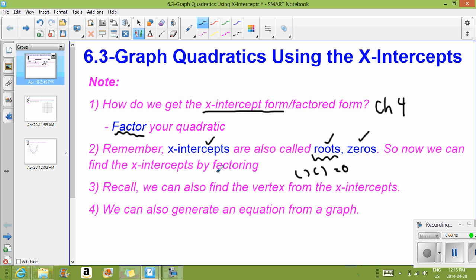So by factoring we're able to get it into our x-intercept form, which shows all those three different things. If you remember, again also back from chapter 4, if we have those x-intercepts we can also find the vertex, and we'll talk about how to do that.